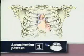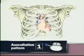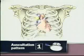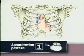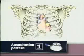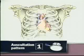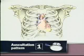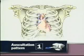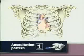For auscultation of the heart, you may choose between two sequences. In the first, start with the diaphragm of the stethoscope and progress from the right second interspace to the left second interspace and down the left sternal border to the apex. Then, with the bell of the stethoscope, listen again at the mitral and tricuspid areas.